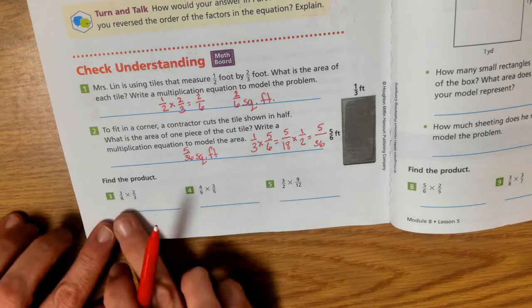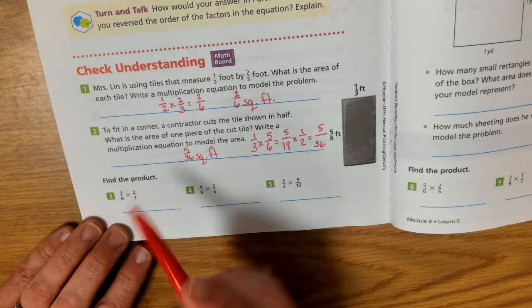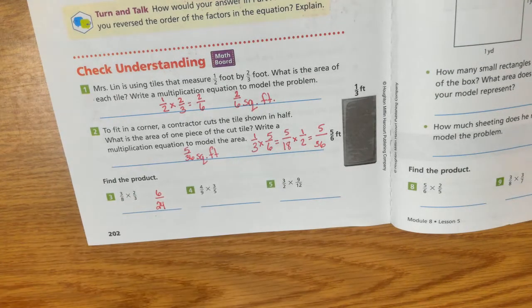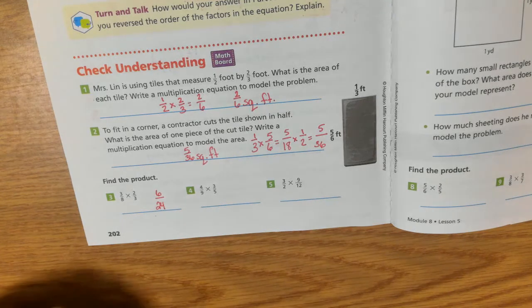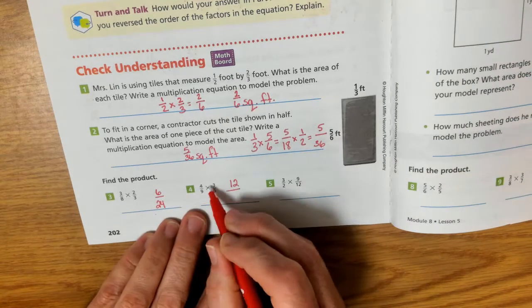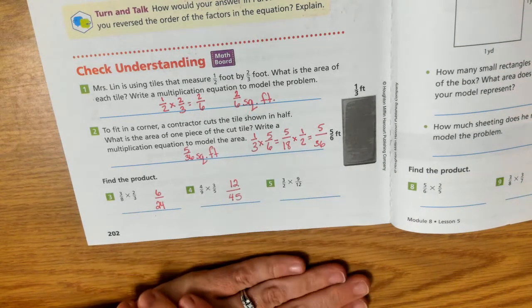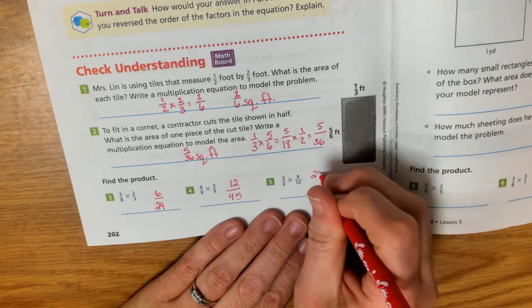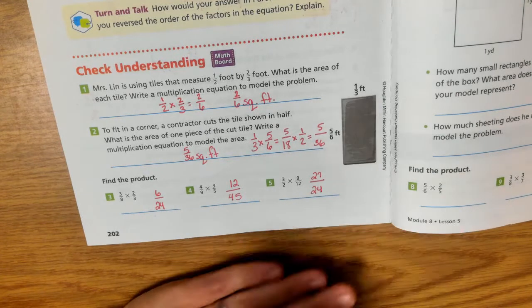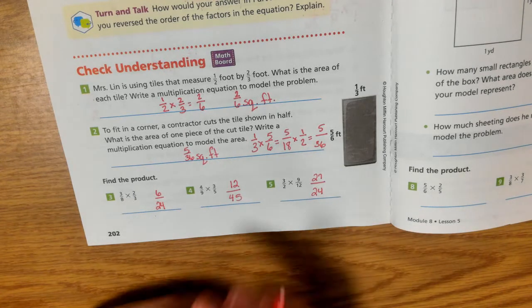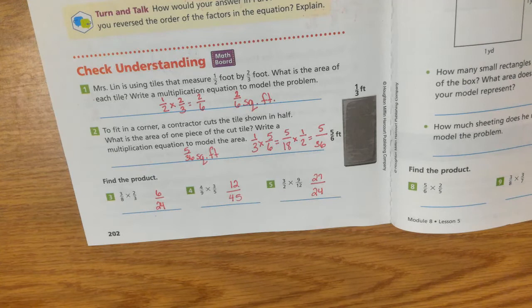All right, find the product. 3 times 2 is 6. 8 times 3 is 24. This is as simple as, if you know your multiplication facts, you're going to be able to solve these. 4 times 3 is 12. 9 times 5 is 45. Multiply your numerators, then multiply your denominators. 3 times 9 is 27. 2 times 12 is 24. This one is an improper fraction. Our top number is bigger than our bottom number. But we're not asked to simplify it, so we're not going to worry about it.